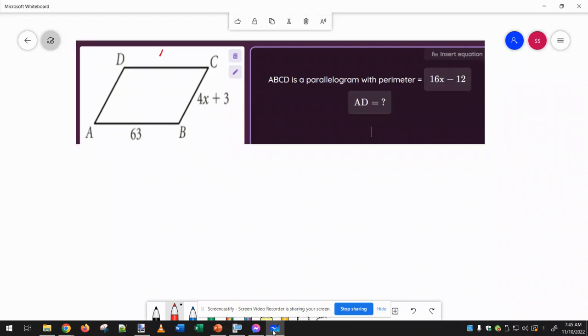All right, if we know this is a parallelogram, then we know opposite sides are congruent. So I can fill in these two sides, and then I know the perimeter is all four sides added up together.